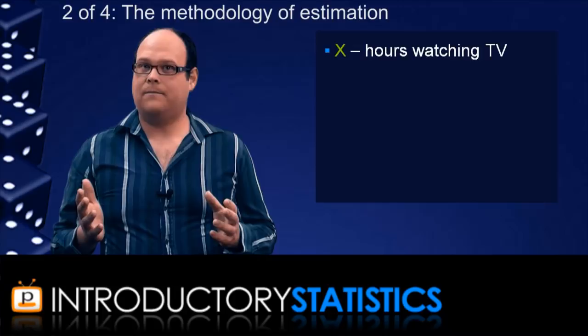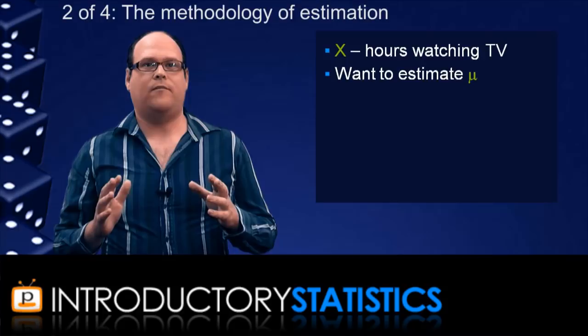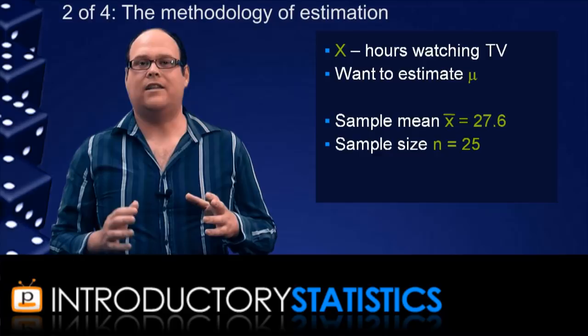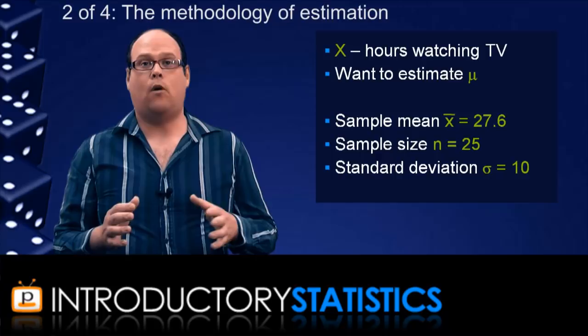We have a variable x, the number of hours a person spends each week watching TV. We want to construct a 95% confidence interval for the population mean mu. We have a sample mean of 27.6 and a sample of 25 people, and let's assume we know that the population standard deviation is 10 hours per week. Think about the following reasoning.